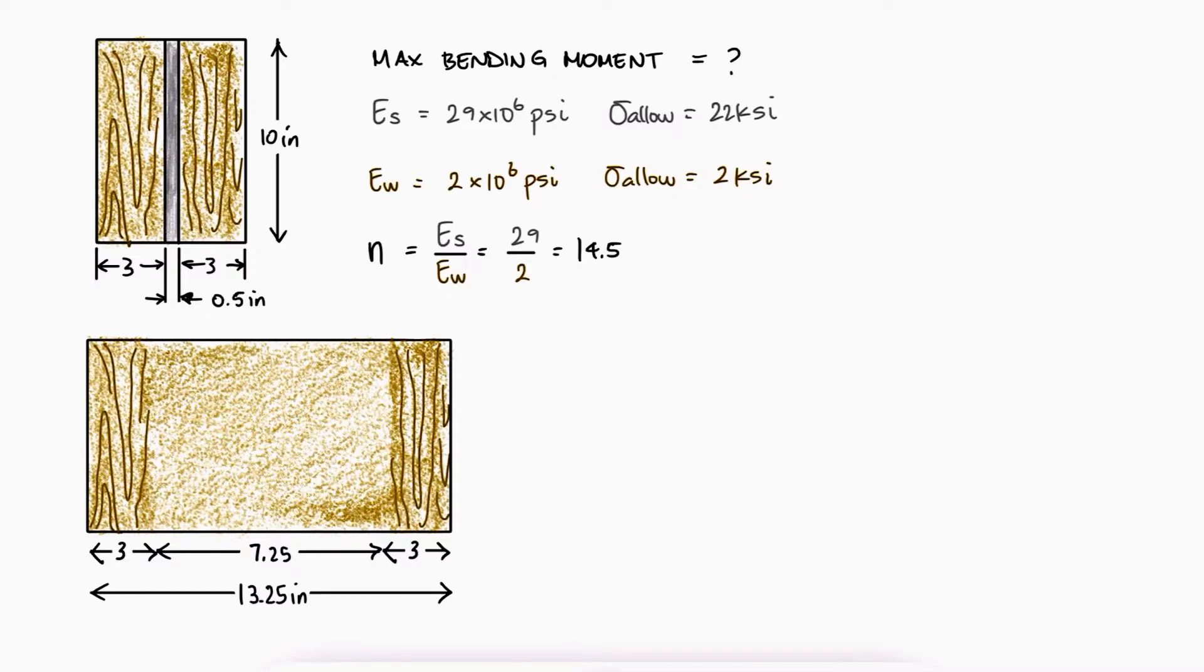The second moment of area for this transformed section, which is only a rectangle, is equal to around 1100 inches to the fourth.